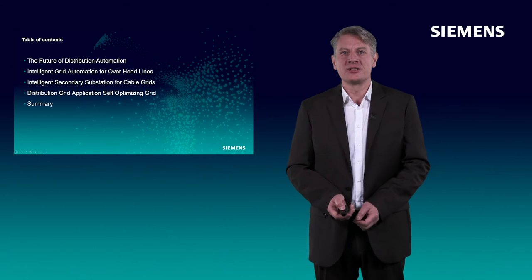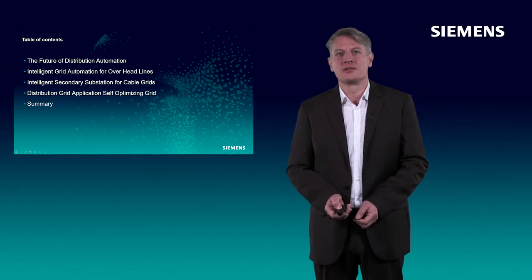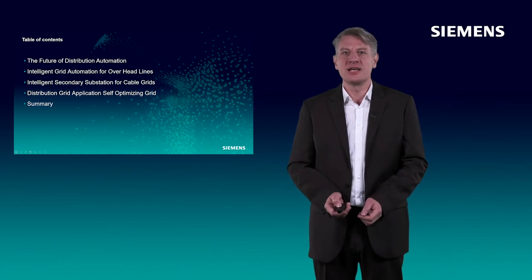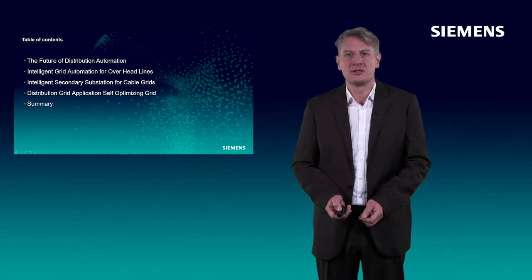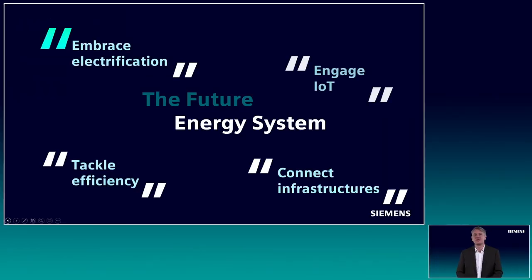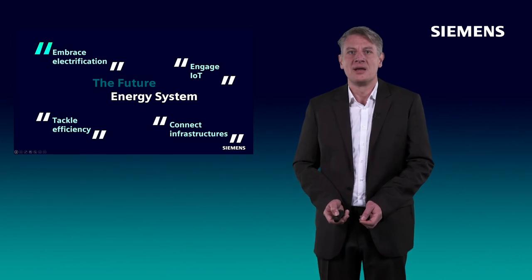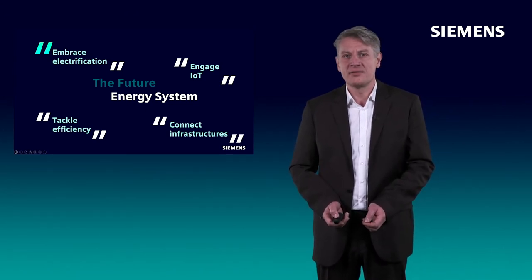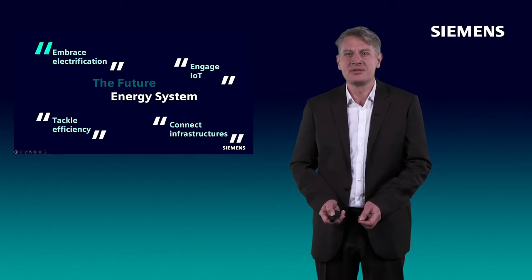The future of energy systems are subjected to considerable challenges. The distribution network operator must deal with many new topics: embrace electrification, tackle efficiency, connect infrastructure where decentralized power supply or volatile feed-in and load scenarios. The increasing number of consumers who simultaneously assume the role of producers, or increased requirements from electromobility, play a decisive role. And engage IoT, where grid-edge devices of distribution automation help to maintain the grid.